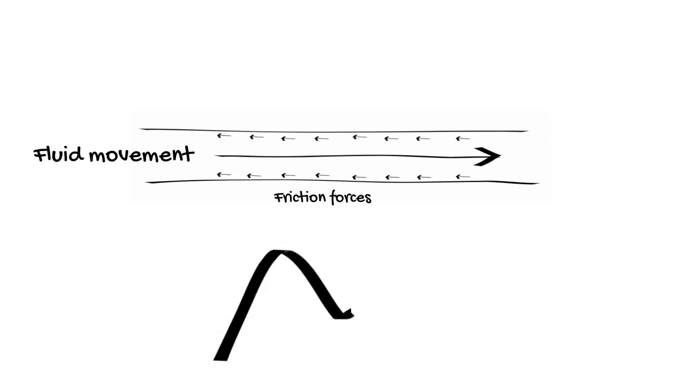In an arterial line system there will be some damping in the system due to friction of fluid within the tubing. This is a good thing so the arterial line is ready to measure the next heartbeat.